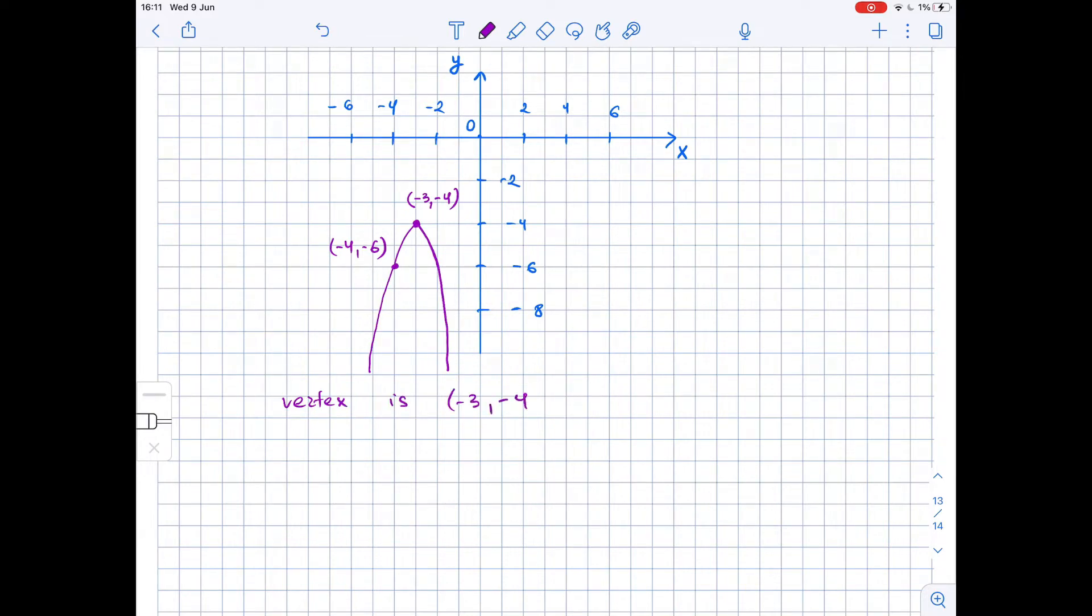So we can write down that g(x) is equal to k times (x minus negative 3) squared plus negative 4, where k is a constant.